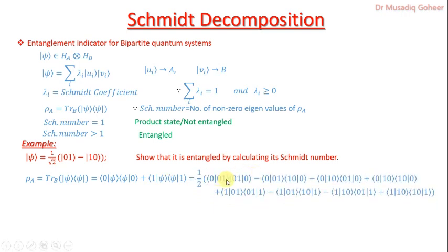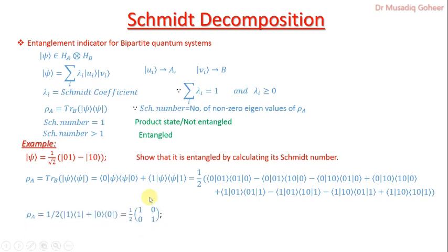Four terms are obtained for zero and four terms for one. In the first term, the outer product of |0⟩|1⟩⟨0|⟨1| is sandwiched between ⟨0| and |0⟩. Similarly, eight terms in total arise — four sandwiched between ⟨0||0⟩ and four between ⟨1||1⟩. The ⟨0| acts on the second qubit, where the first position belongs to A and second to B, removing the degrees of freedom of B.